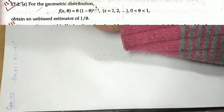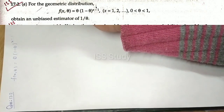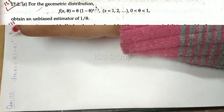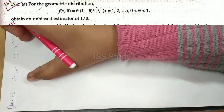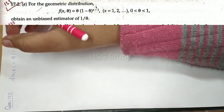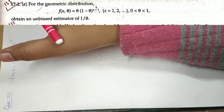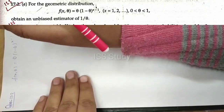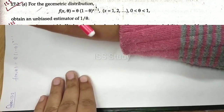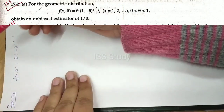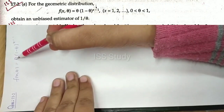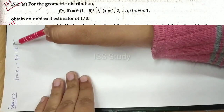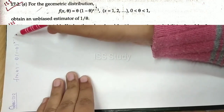You will know that the geometric distribution has the form p times q to the power x. But this is given as a Pascal geometric distribution. The Pascal geometric distribution is a geometric distribution of a form where we use the formula p times q to the power x minus 1.